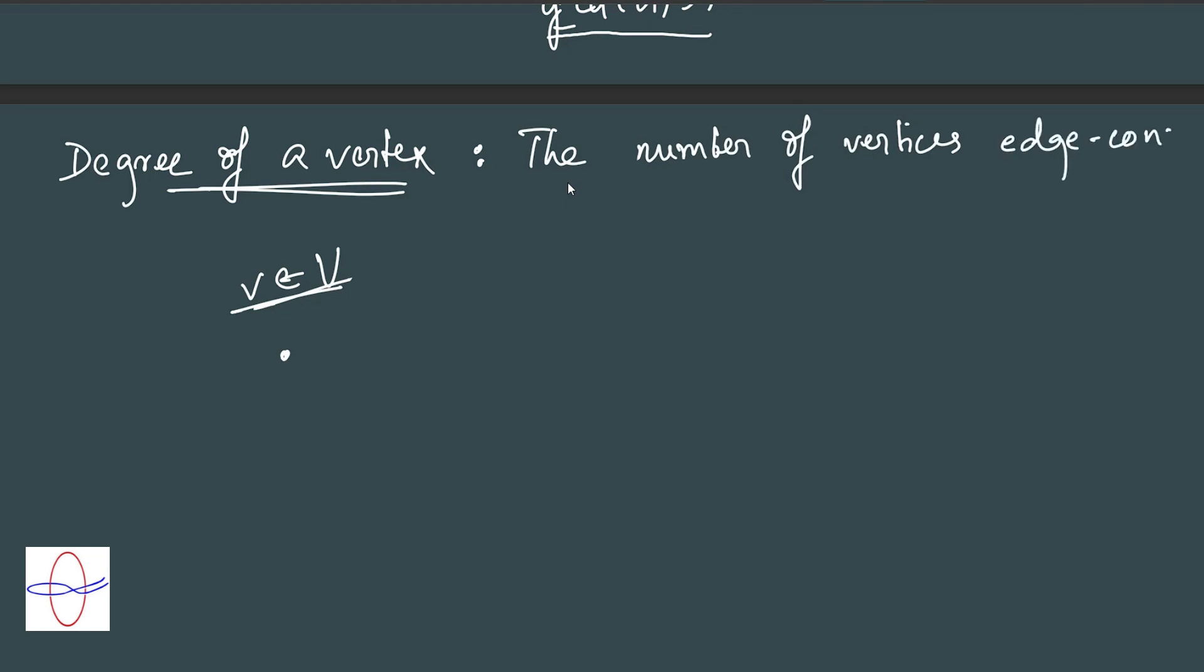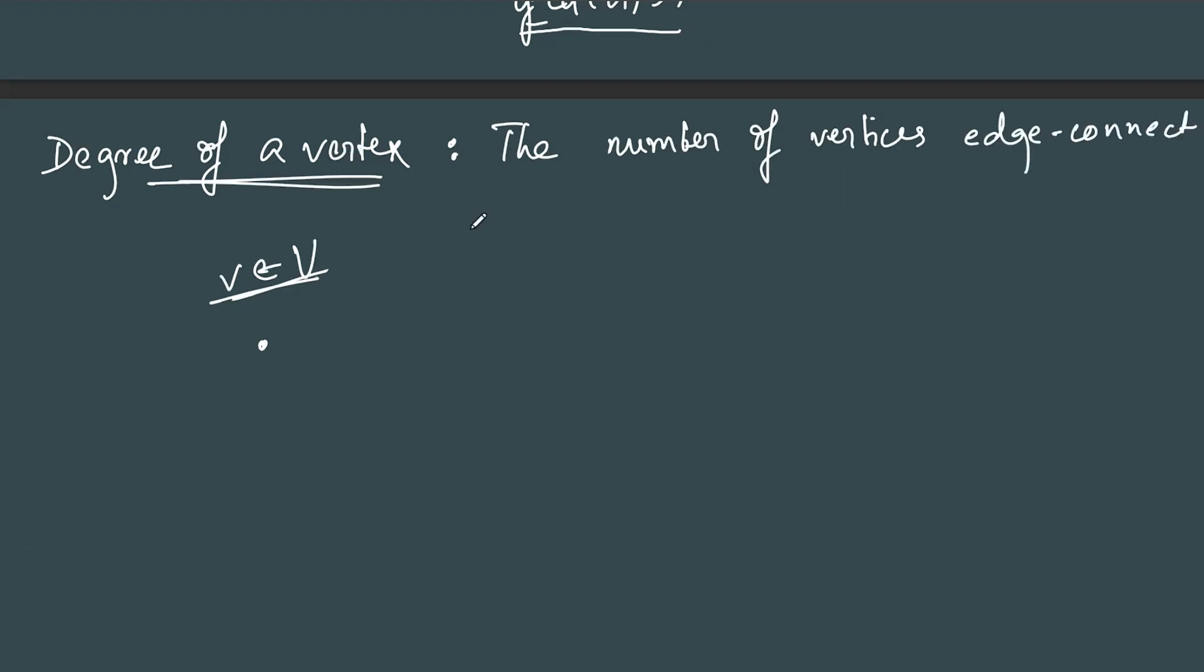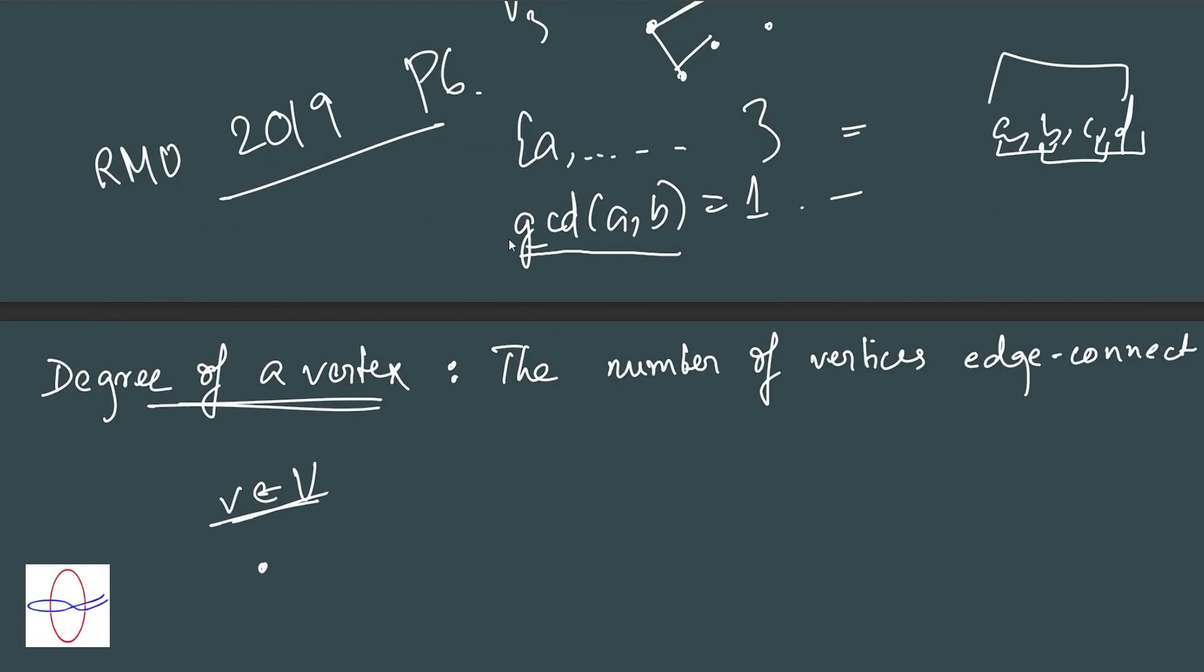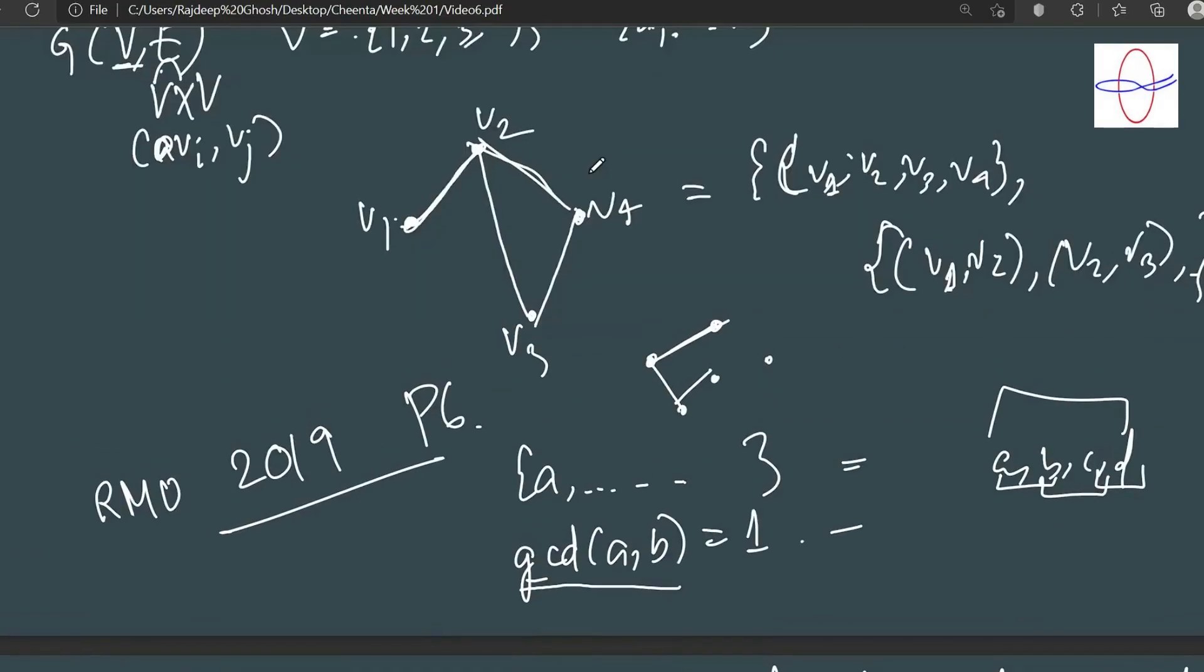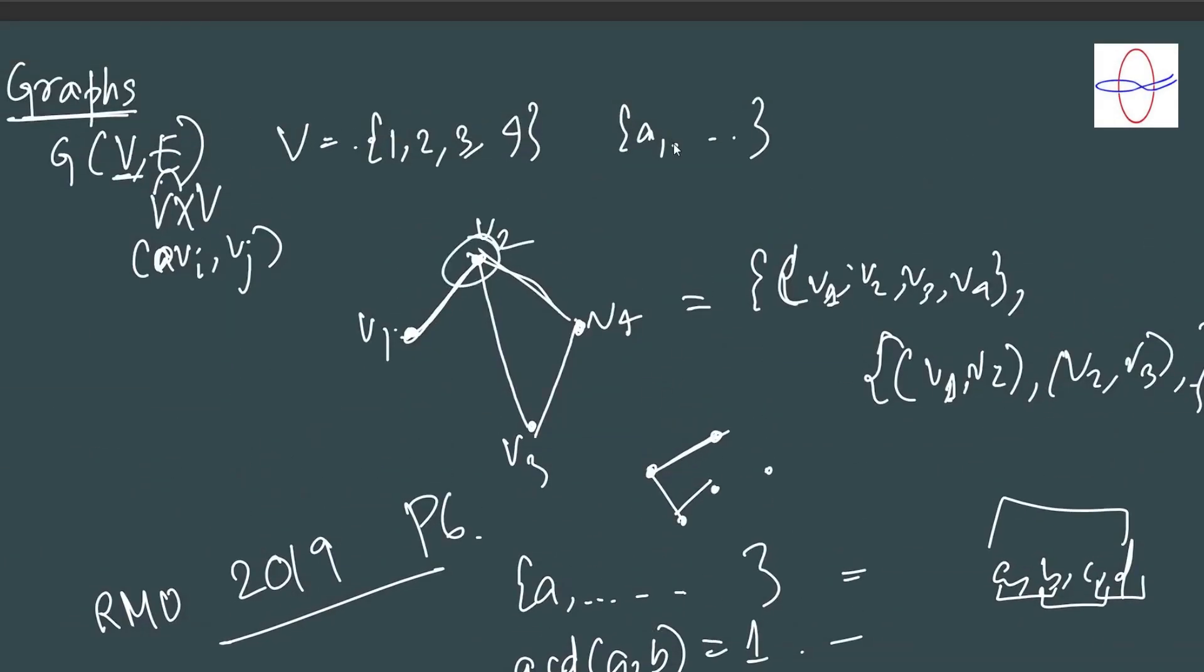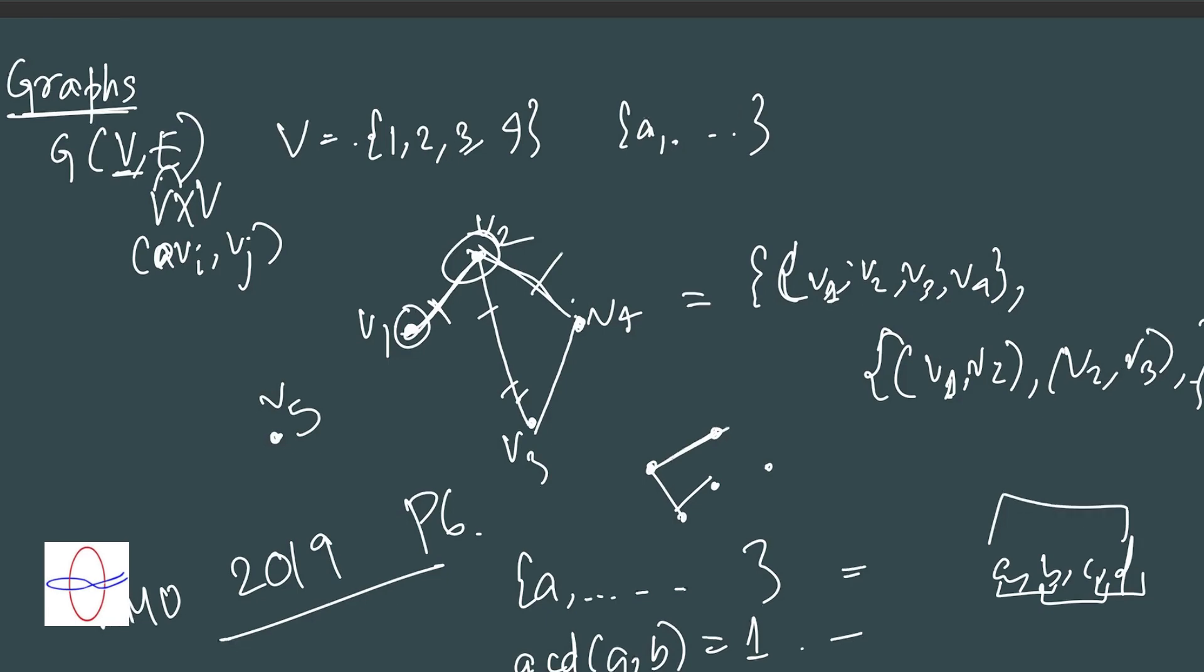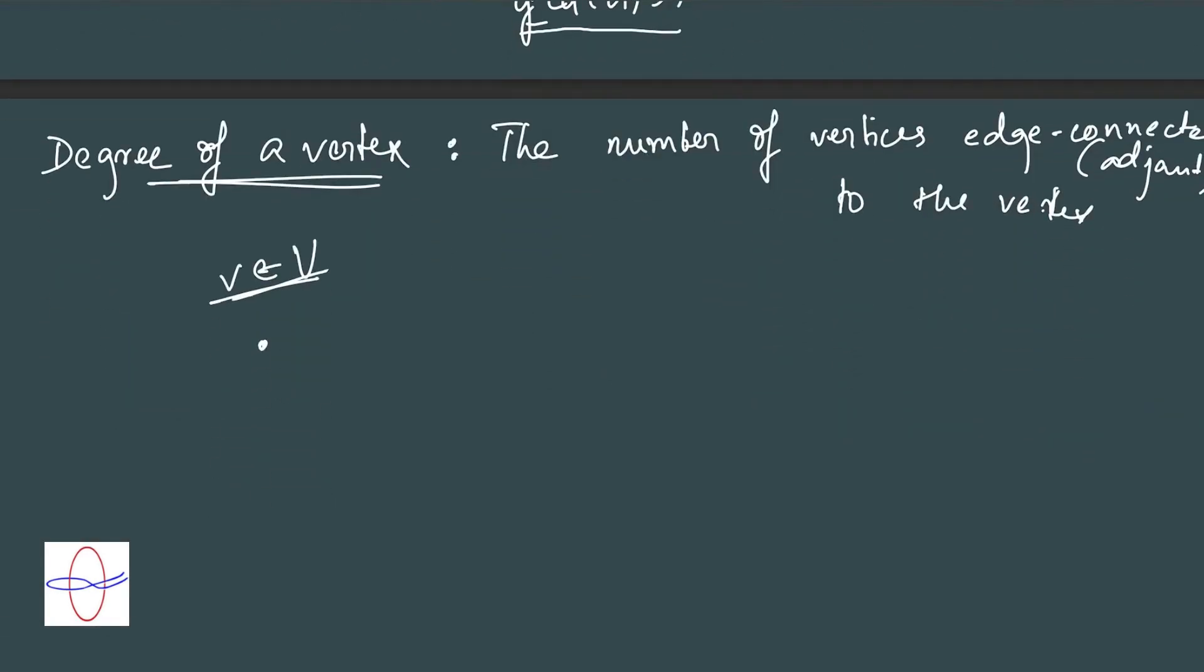Given a graph and a vertex in that graph, v element of the vertex set, we say the degree of v is the number of vertices edge-connected, or adjacent. We say adjacent to mean that two points are connected by an edge - adjacent to the given vertex. So in the example we took here, the degree of v2 is 3 because 1, 2, 3. The degree of v1 is 1, degree of v3 is 2, degree of v4 is 2. We could also have an isolated vertex v5 with degree 0.